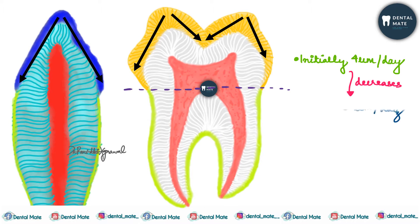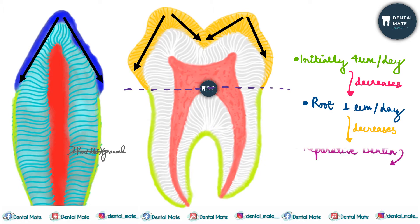After eruption, the rate slows down to 1 micrometer per day until the root is completely developed, and then further slows during secondary dentinogenesis — that is reparative dentine formation — to around 4 micrometers per day for several months after a tooth is restored.